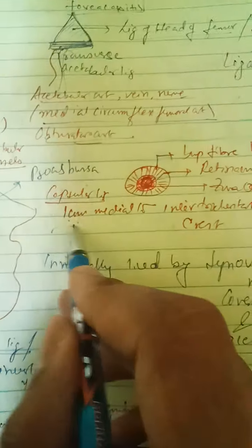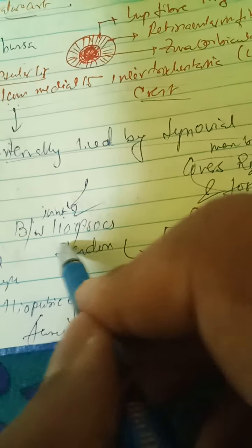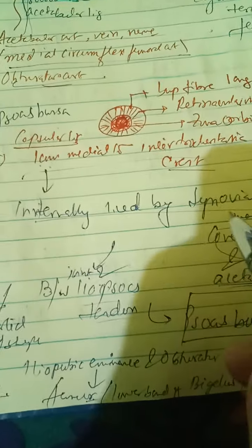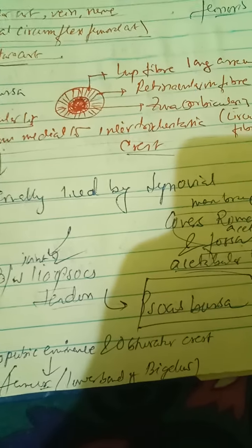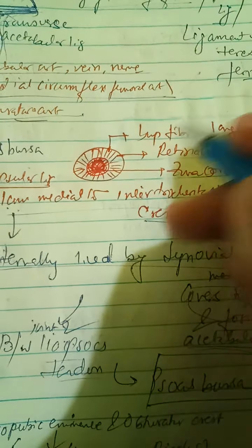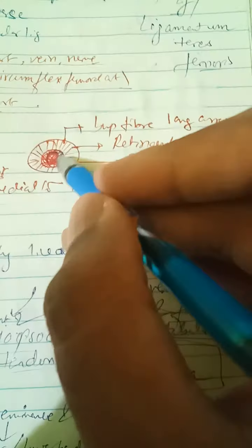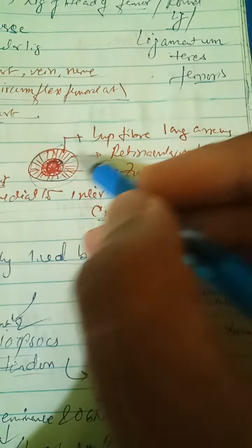The capsular ligament attaches one centimeter medial to the intertrochanteric crest and is internally lined by synovial membrane, which covers the round ligament, the acetabular fossa, and the acetabular labrum. It lies between the joint and the iliopsoas tendon, forming a bursa posteriorly. The capsular ligament has two types of fibers: centrally there is a zona orbicularis (circular fibers) and peripherally there are longitudinal fibers.